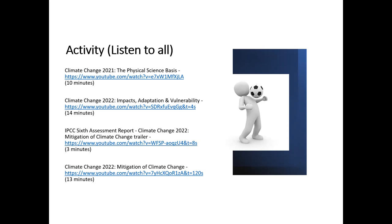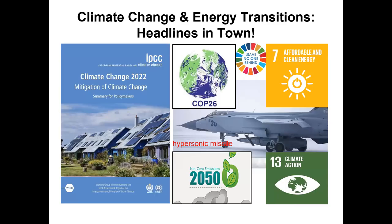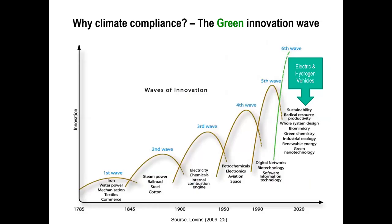There are many issues when talking about climate change — the IPCC reports, COP26, the war between Ukraine and Russia, the SDGs, and net zero emissions. Why do we talk about climate change and climate compliance? There is a graph showing the green innovation wave. In the first wave we had iron, water power, textiles. The second wave introduced steam power, steel, and cotton. The third wave — probably one of the most challenging in terms of today's climate issues — saw the discovery of electricity, chemicals, and the internal combustion engine, which is one of the key drivers of where we are today.